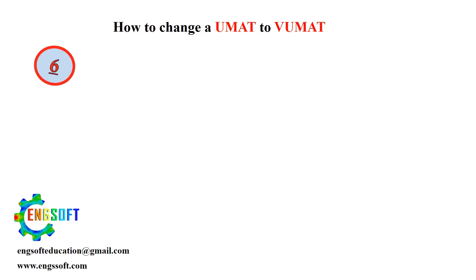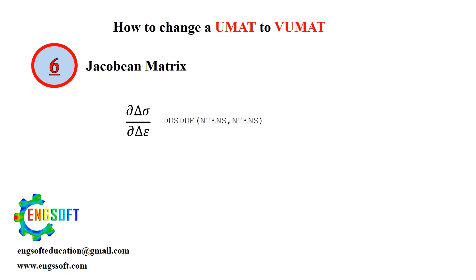6. Jacobian Matrix. In U-MAT, the Jacobian matrix is crucial for the subroutine. However, in VU-MAT there's no need for a Jacobian, which makes VU-MAT significantly simpler to code. This comes down to the difference between explicit and implicit algorithms, which has been covered in detail in previous videos.